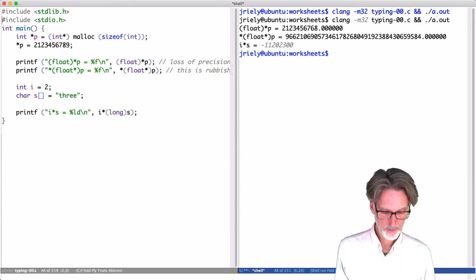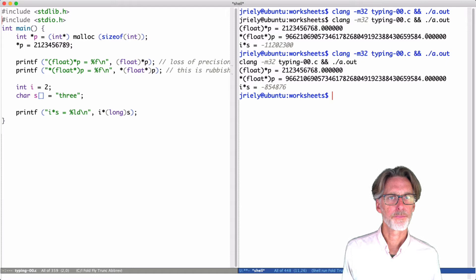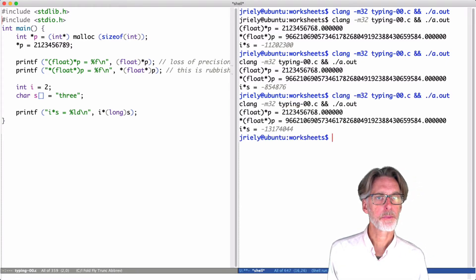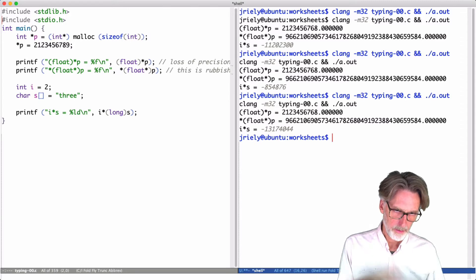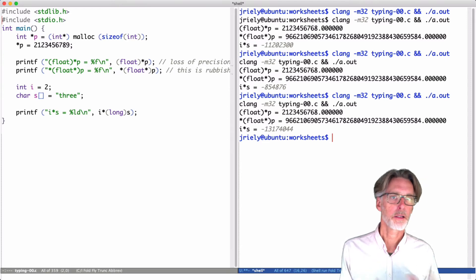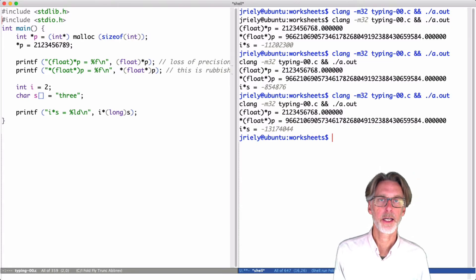If we run the program multiple times, we'll actually get different values for this. And the reason this is happening is because of address space randomization. What's happening here is every time I run the program, the operating system is loading in the heap in different places so that the numbers or the addresses of the heap are sort of difficult for an attacker to predict. More about that in a minute.